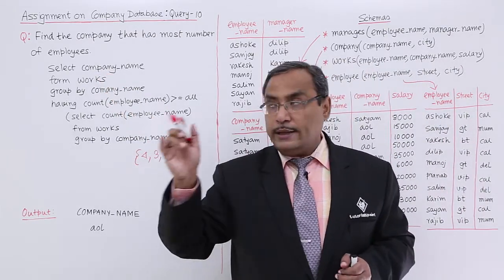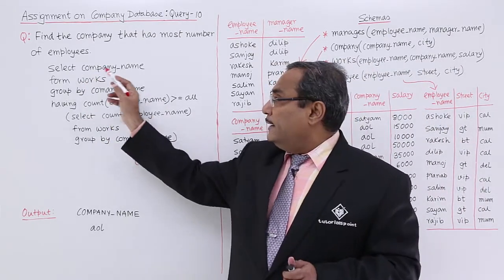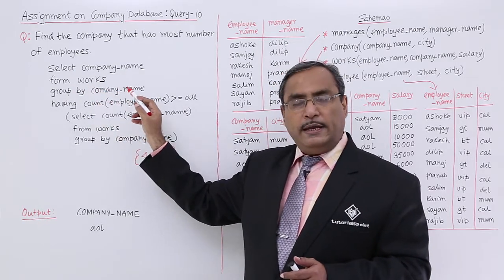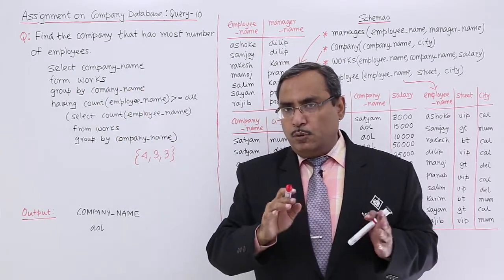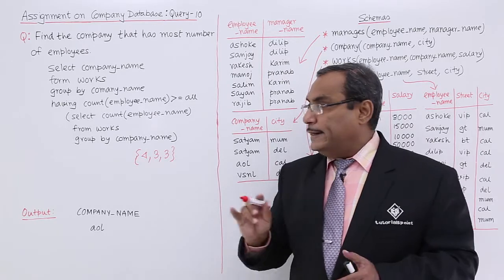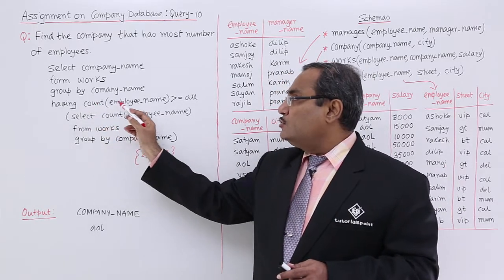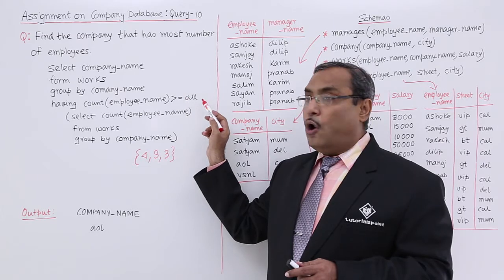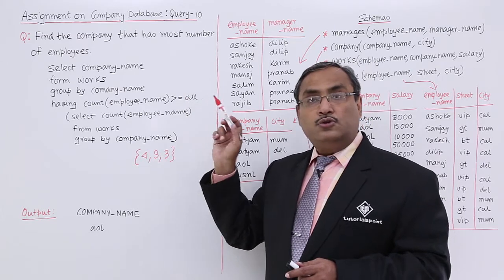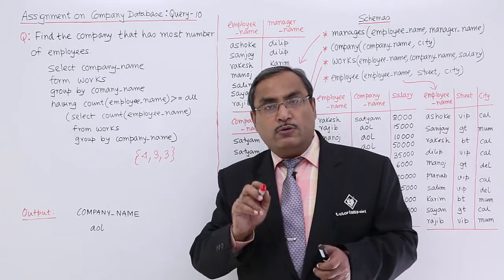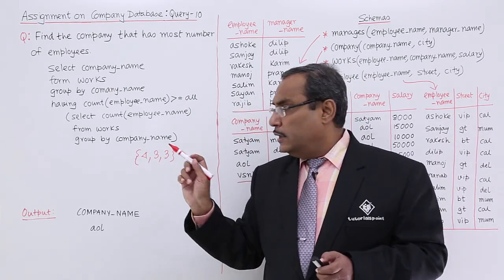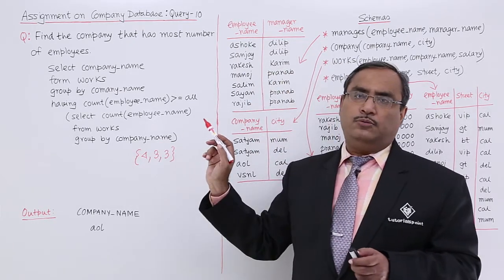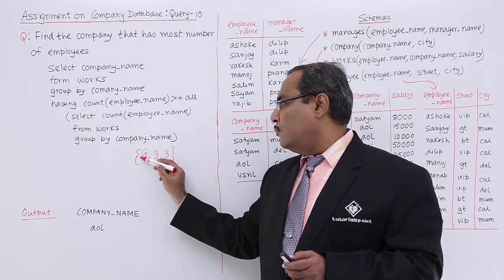Now let us go for the outer query: SELECT company_name FROM works GROUP BY company_name HAVING COUNT(employee_name) >= ALL. Here also we are doing GROUP BY on company_name. Whenever you use greater than or equal to ALL, that means we are going to get the maximum of this count. Here the maximum count is 4.